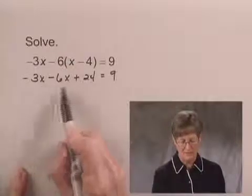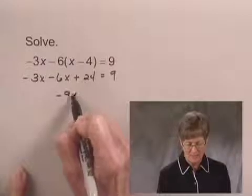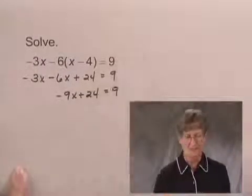negative 3x minus 6x, and I can collect them. That's equal to negative 9x. That plus 24 is equal to 9.